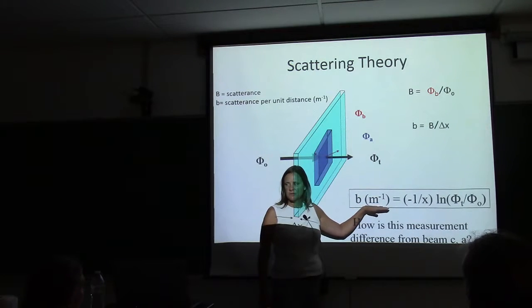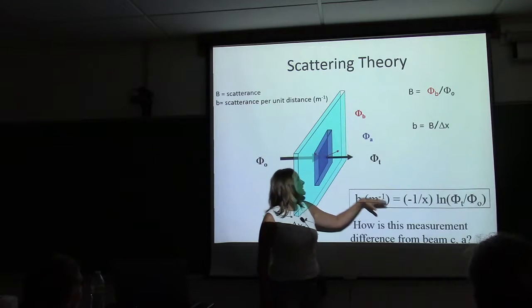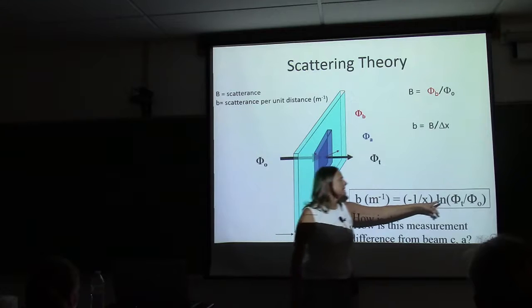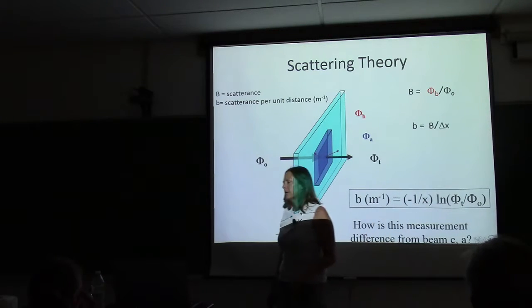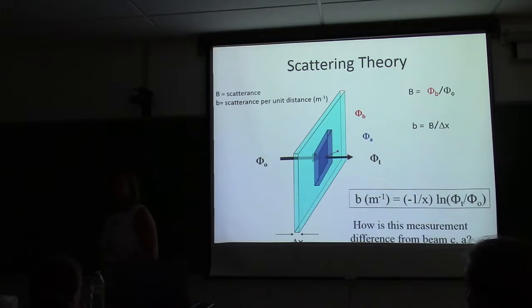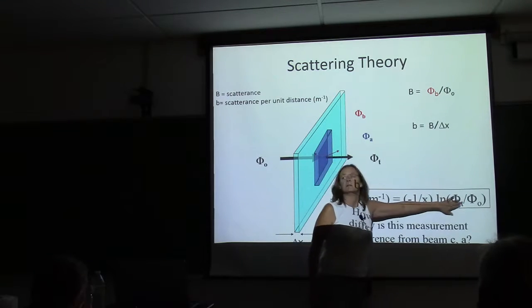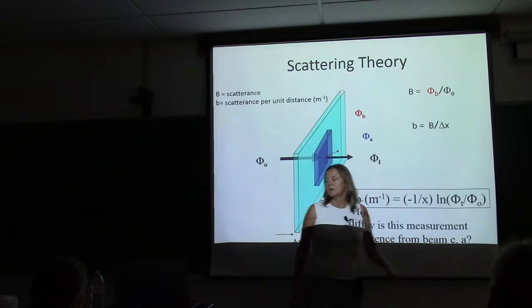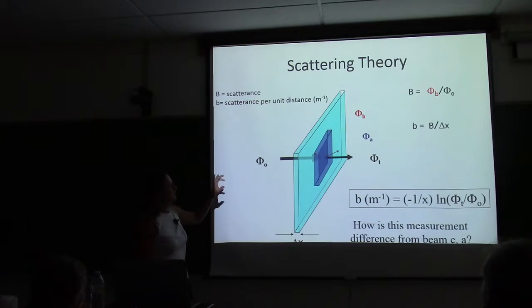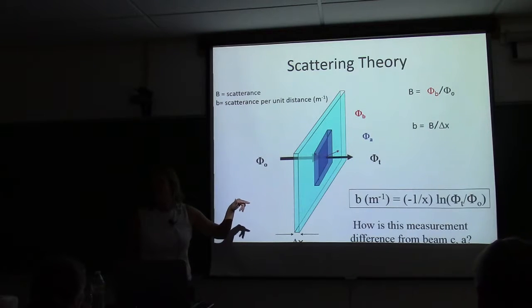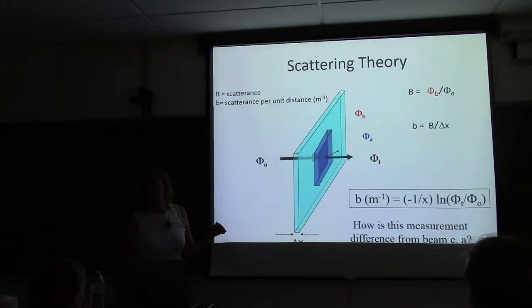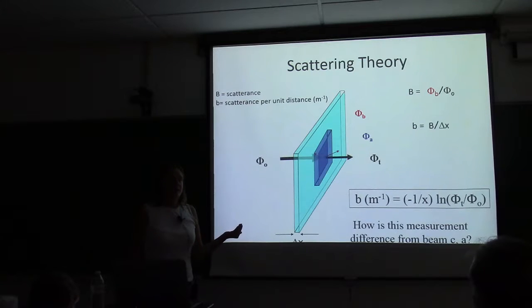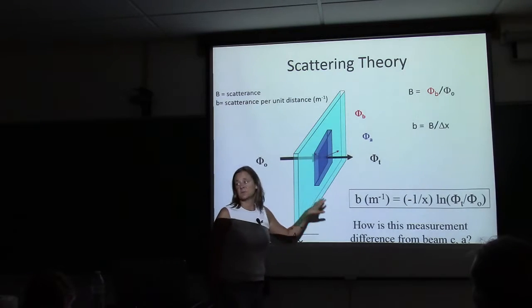In order for the transmitted over incident power to be related purely to scattering, there has to be no absorption — no contribution from absorption in the transmitted power. That will inform how people design scattering meters. Kurt's going to talk about scattering meters in his lecture, but we already know how the AC9 derives scattering: it doesn't measure scattering directly, but derives it by subtracting absorption from attenuation.